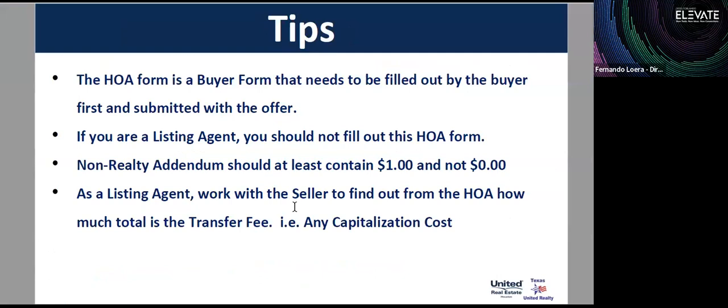Some tips to summarize: the HOA form is a buyer form that must be filled out by the buyer first and should be submitted with the initial offer. If you are the listing agent, do not fill out the HOA form. On the non-realty addendum, always include at least one dollar — not zero. As the listing agent, work with the seller to find out the total HOA transfer cost. We've been noticing that people selling houses bought just one year ago from a builder still have capitalization costs — reserves the association is backfilling — that could be $1,000 to $4,000.